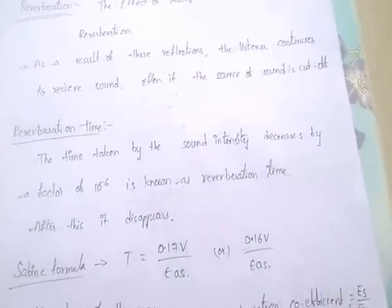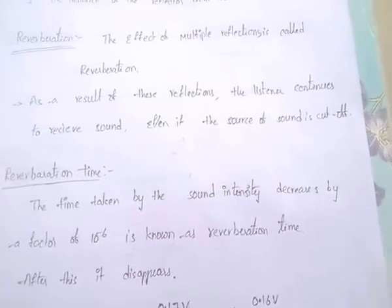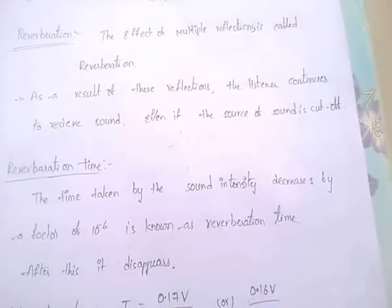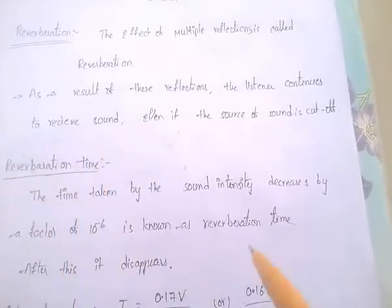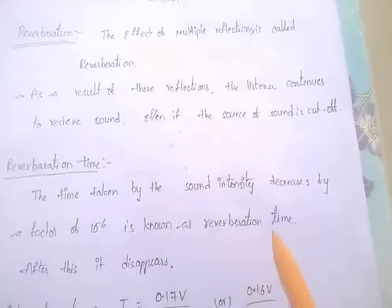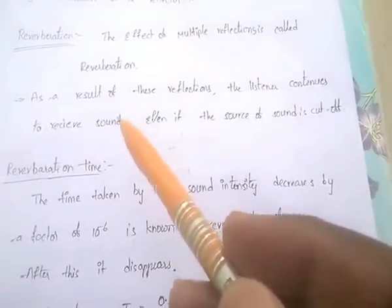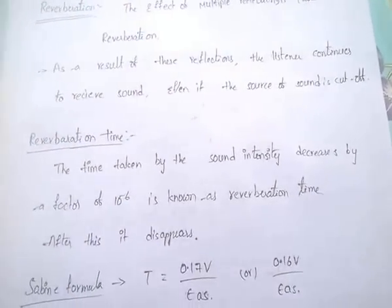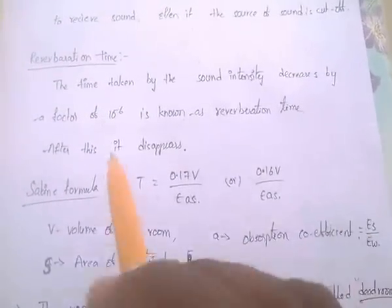Reverberation time is the time taken for the sound intensity to decrease by a factor of 10 to the power of minus 6. After the reverberation time, the listener cannot receive the sound and the reverberation disappears.